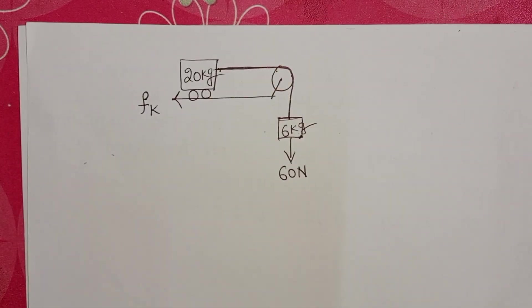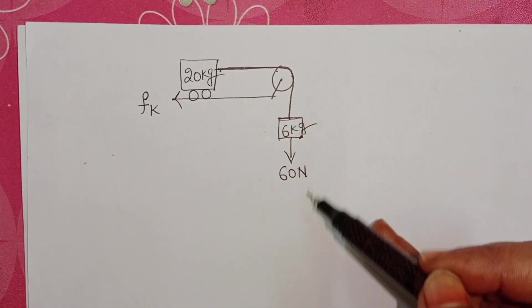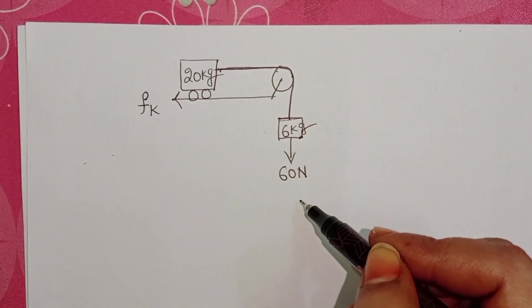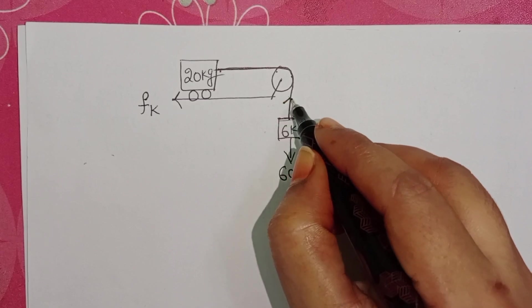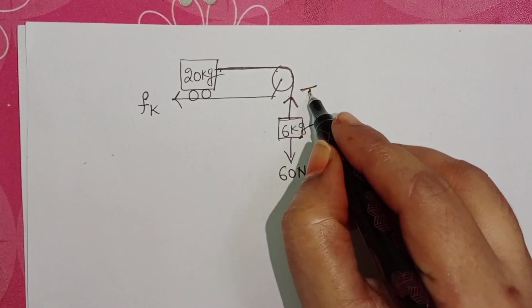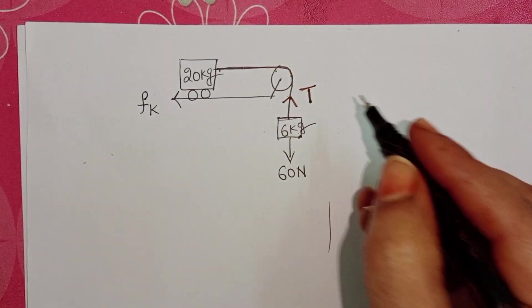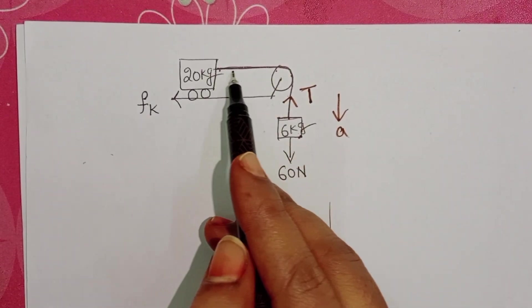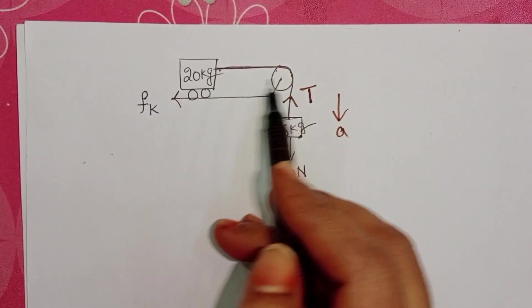Whenever this 6 kg block accelerates in the downward direction due to the weight of the block acting downward, tensional force acts in the upward direction. Due to this, this block accelerates in the downward direction and this trolley is pulled towards the right side.